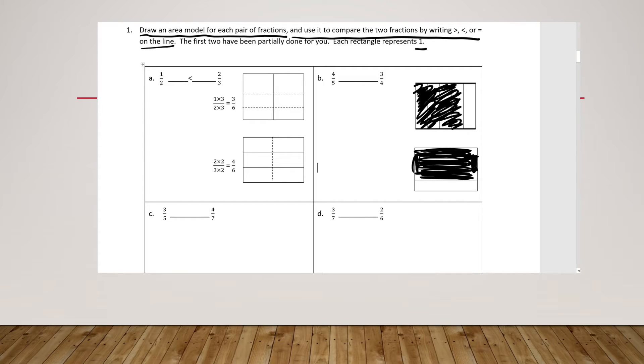So I've used my tape diagram to show and model these two fractions. So I can take my tape diagram and find a common denominator, and there are two different strategies that we've learned. We can multiply the denominators, five times four.